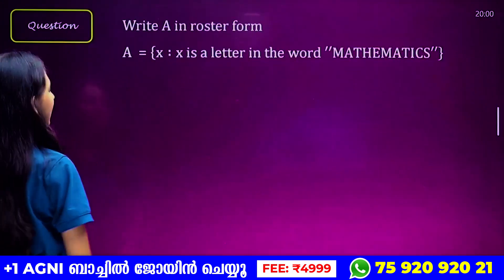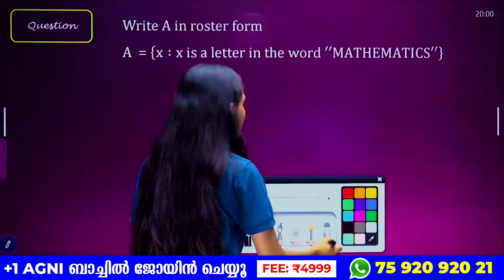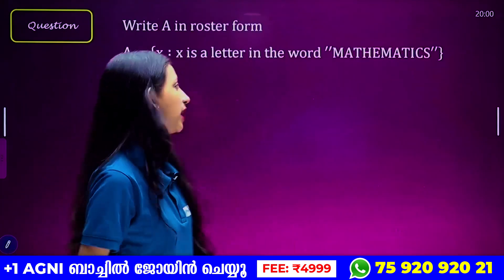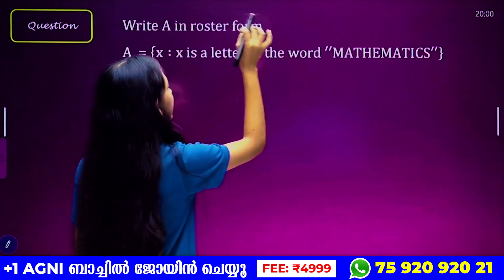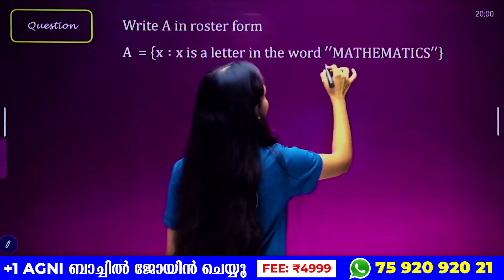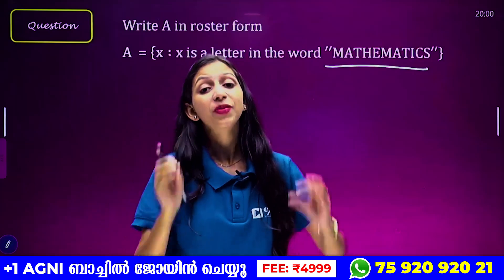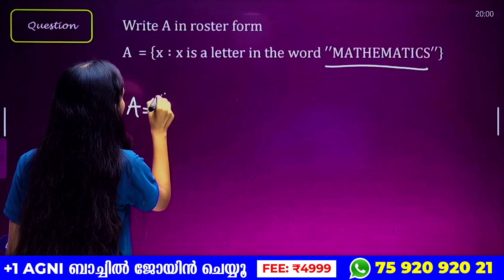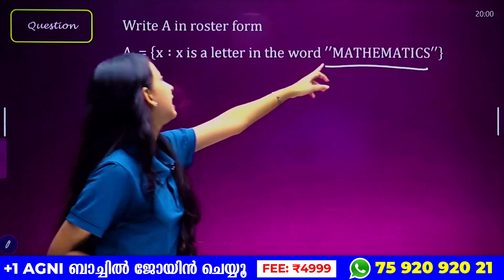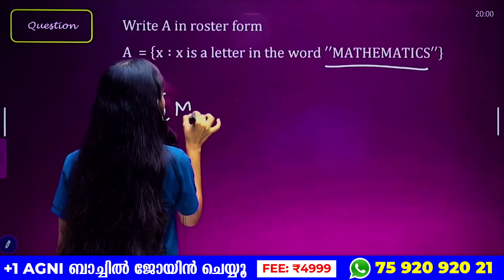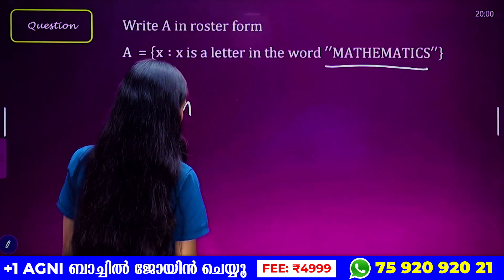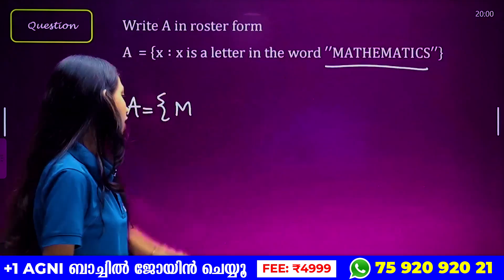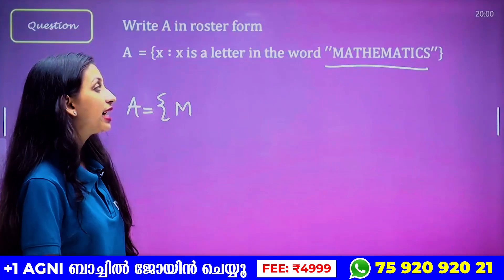The first question is to write A in Roster Formula. We will call A in Roster Formula. What is A in Mathematics? We call A in Roster Formula, we call A in Roster Form, and the second part will come from A. We will use a service called A.